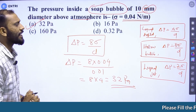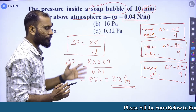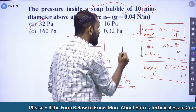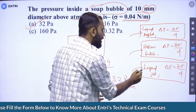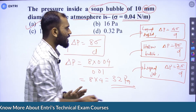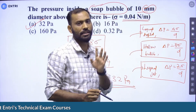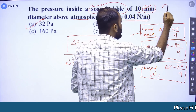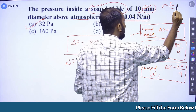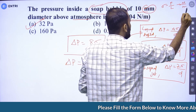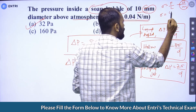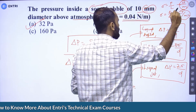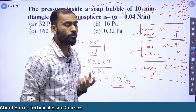Option A is correct. Surface tension is defined as force acting per unit length, with unit Newton per meter. It is also expressed as surface energy per unit area, with unit Joule per meter squared. Both representations — Newton per meter and Joule per meter squared — are valid units for surface tension.